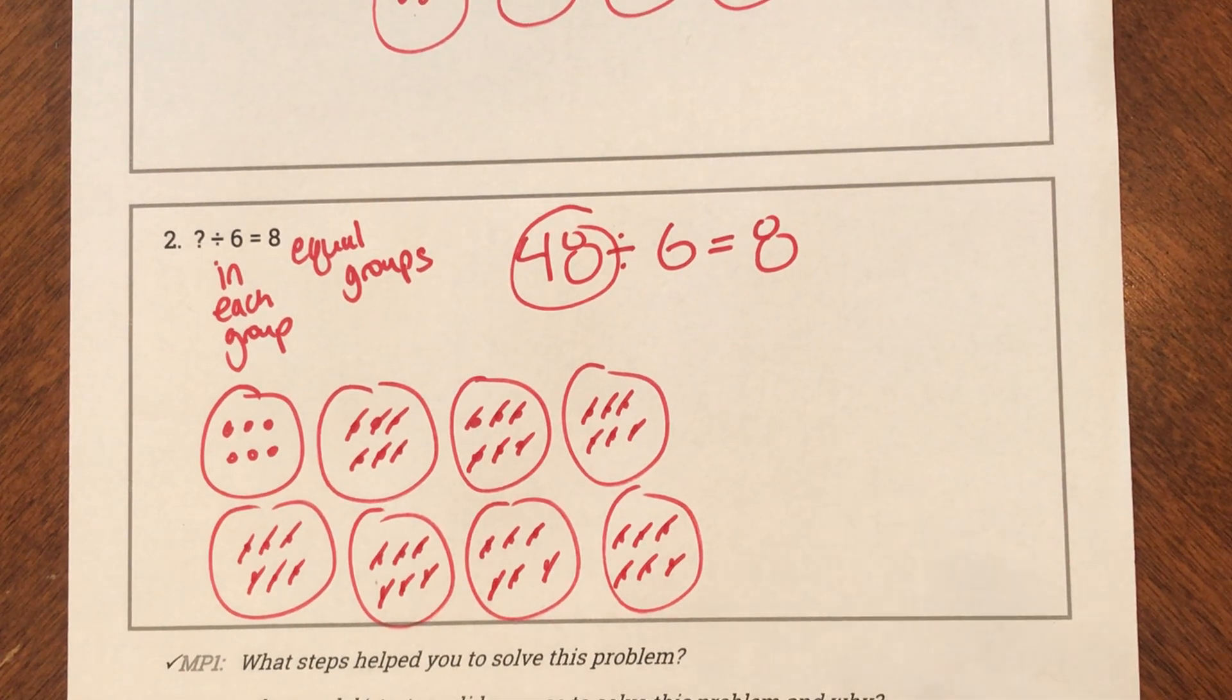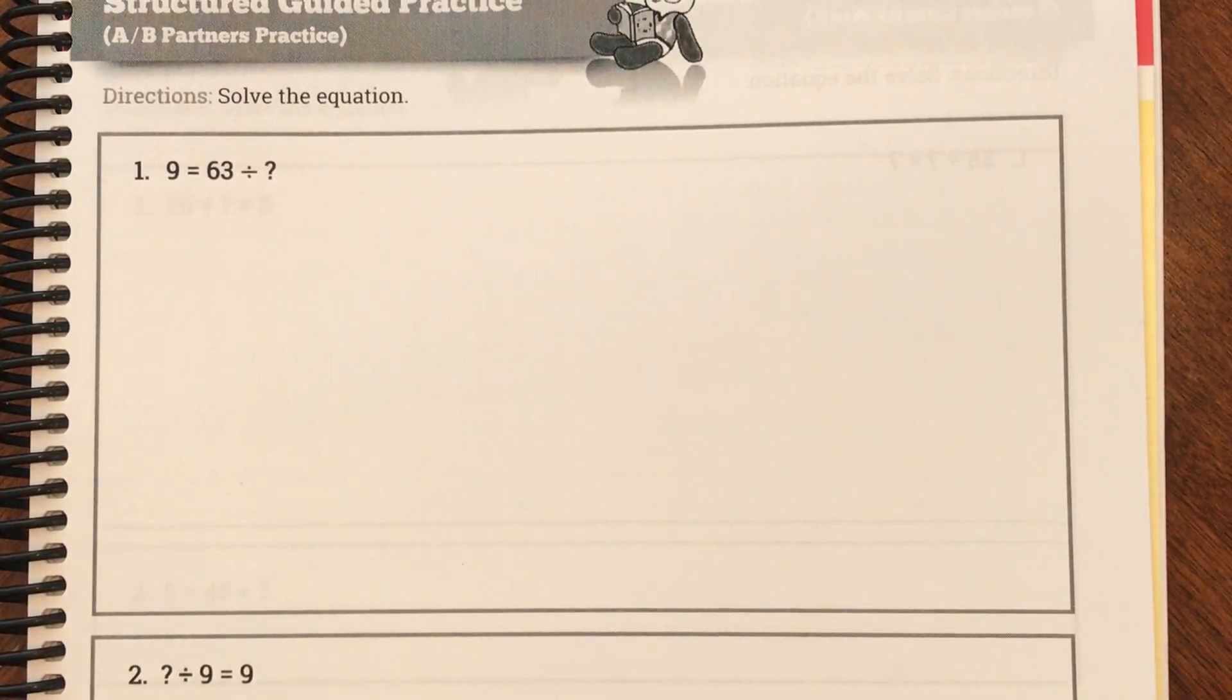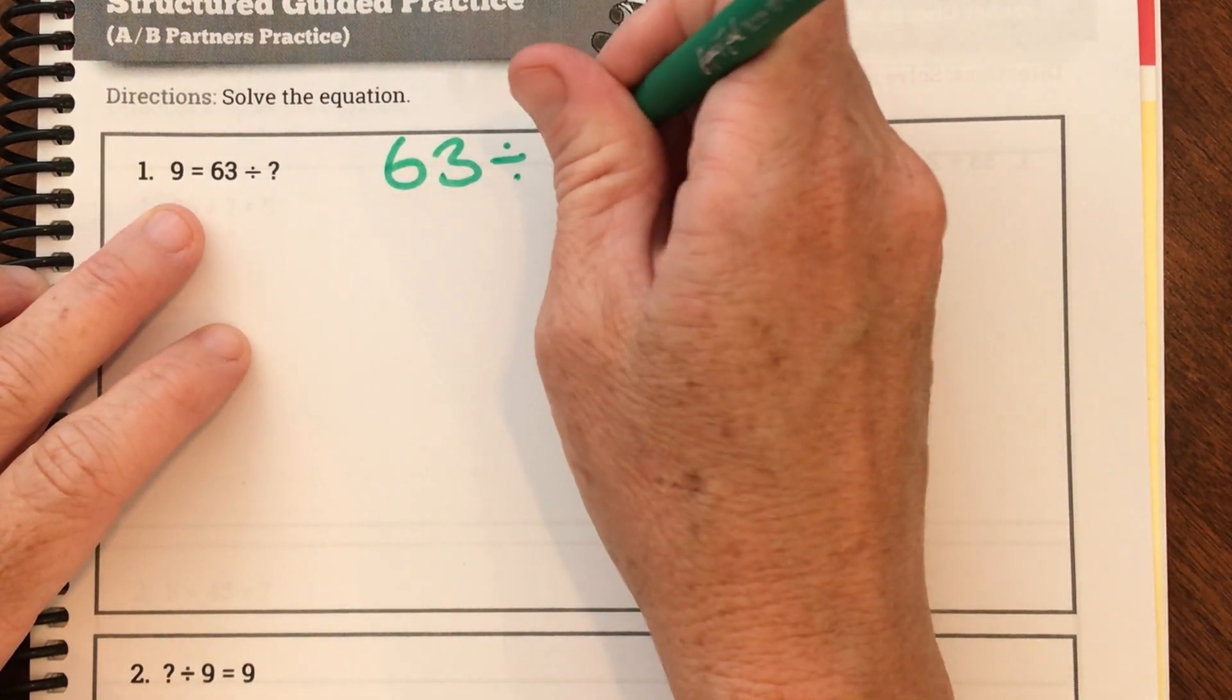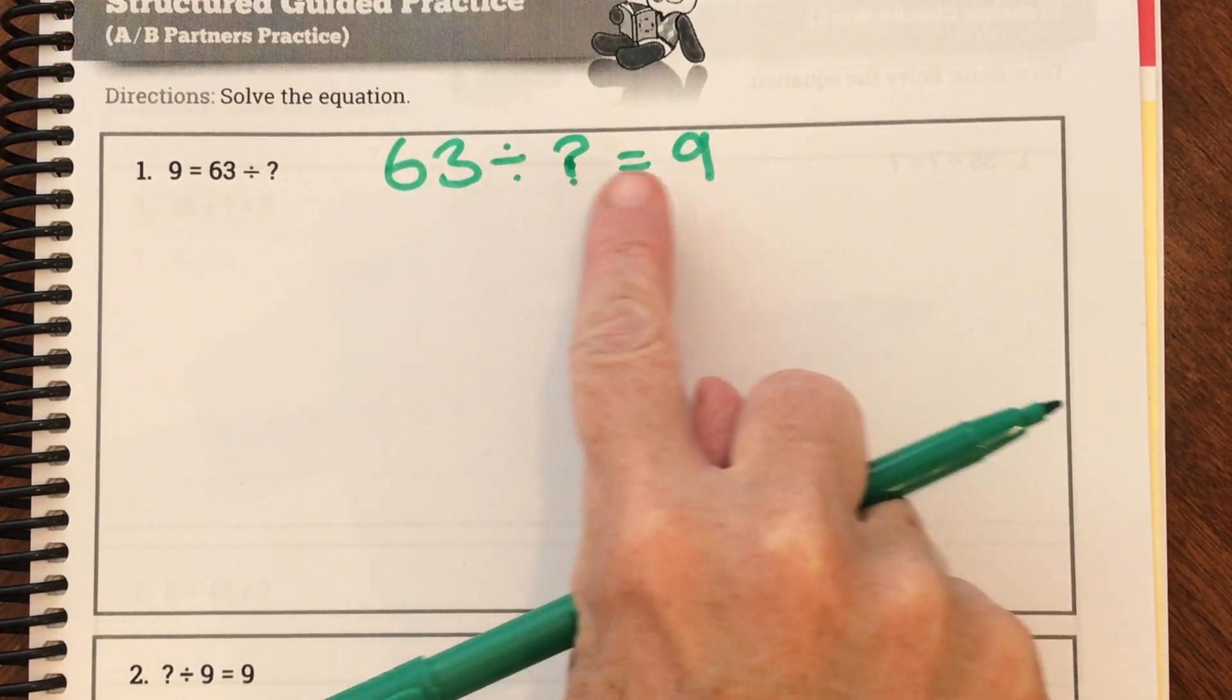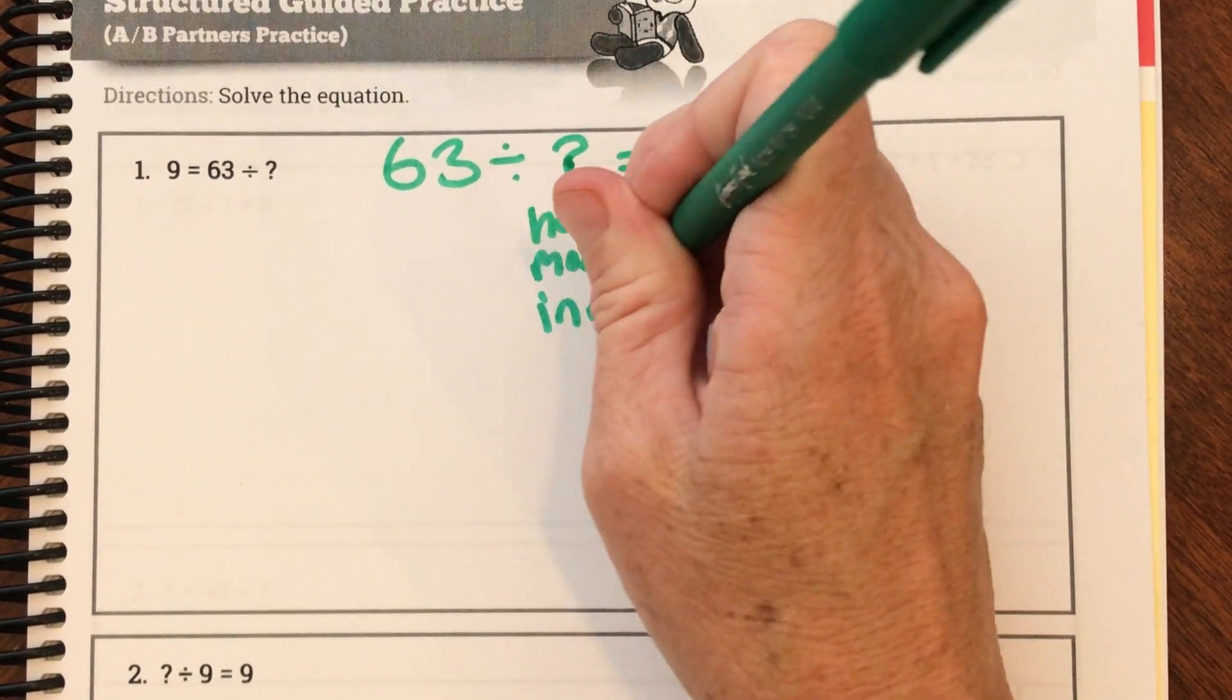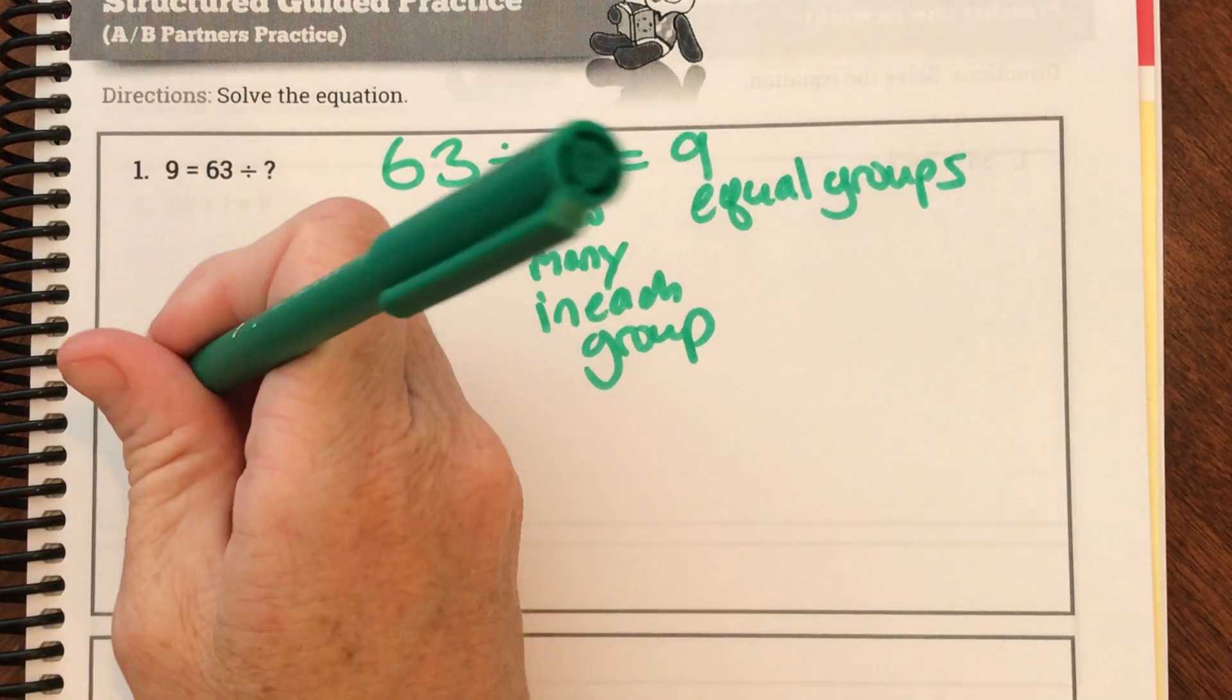Let's do some of these together. Let's look at our first one. Our first one says we have 63 and we're going to divide it, we don't know, and then our answer is nine. So sometimes friends, I like to write it a little different. I like to put my equal sign at the end. So I have 63 and I divided it and I have nine. So let's say we have 63. We don't know how many are in each group. That's our unknown. But I know I have nine equal groups.